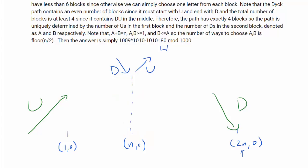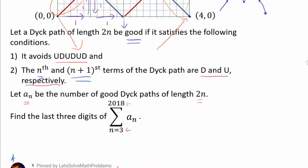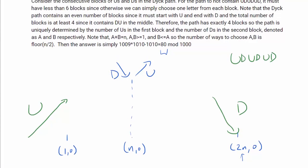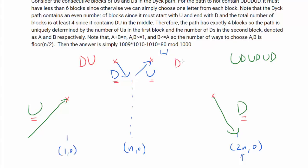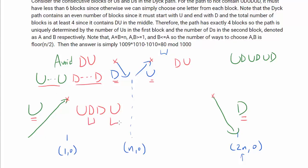Taking into account that this Dyck path has to avoid UDUDUD: we already see from the diagram that we have U, D, U, D from the boundary terms and center DU. This means that if our Dyck path contains any additional DU between those segments, we will have UDUDUD, which violates the condition. So we have to avoid DU between both halves. The only way to avoid DU within a segment is to have a series of U's followed by a series of D's — if you alternate UD back to U, or DU back to D, you are bound to contain DU. So we know for sure we are going to have a series of U's followed by a series of D's in each half.